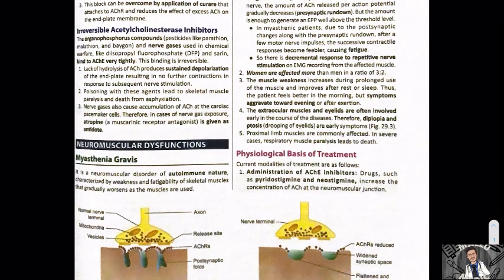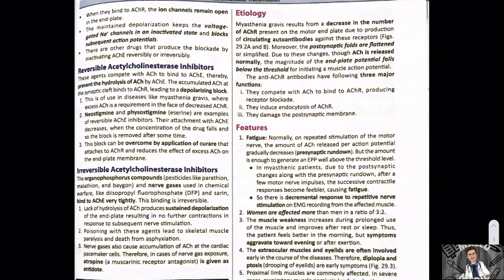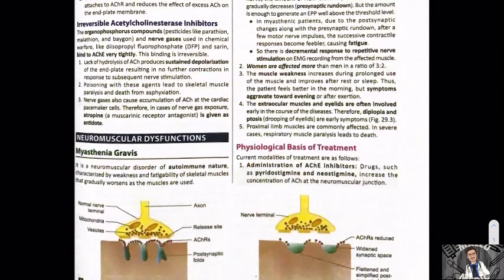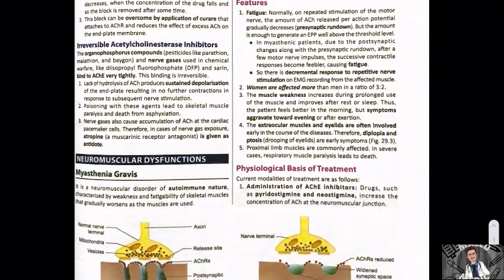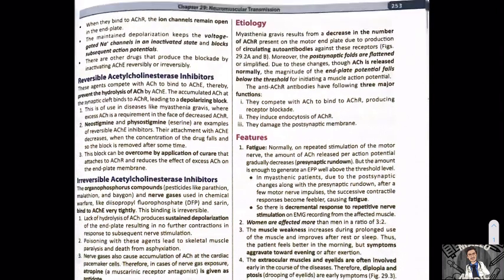Hi one and all, Malamedic here. Today we will start with the physiology series and the topic for today is myasthenia gravis. We will be doing the video in Malayalam. Myasthenia gravis is a neuromuscular dysfunction disorder. This is an autoimmune disorder, characterized by weakness and fatigability of the skeletal muscles.